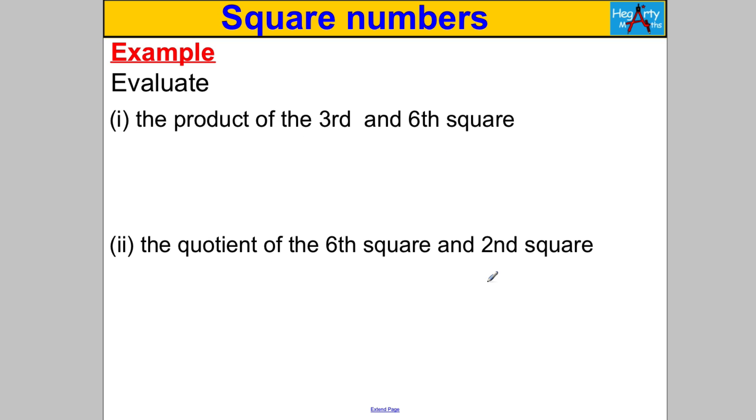What's the product of the third square and the sixth square? Product in maths means multiply. The third square is 3 times 3 which is 9, the sixth square is 6 times 6 which is 36. We want to multiply 9 by 36. Using the distributive law, that's 10 lots of 36 subtract 1 lot of 36. 10 lots of 36 is 360, 1 lot of 36 is 36. 360 take away 36 is 324. Done.